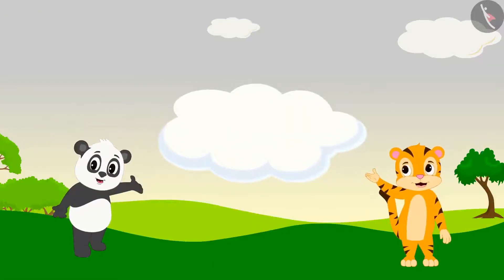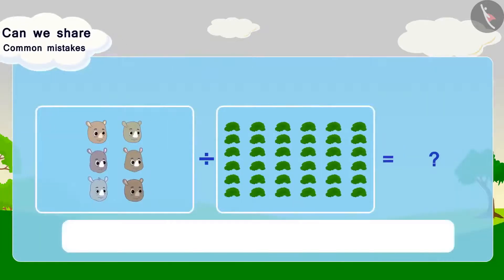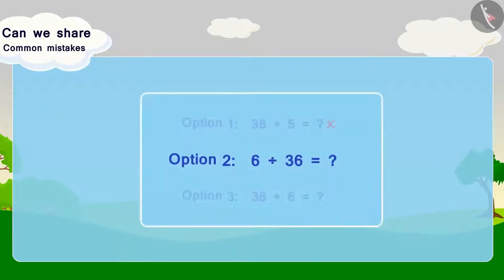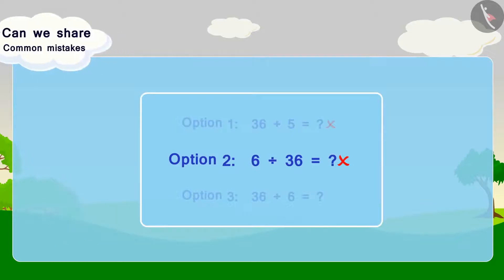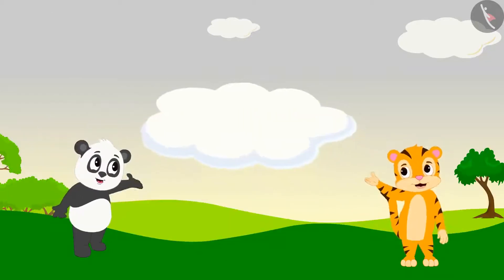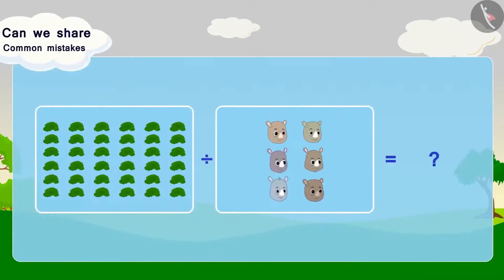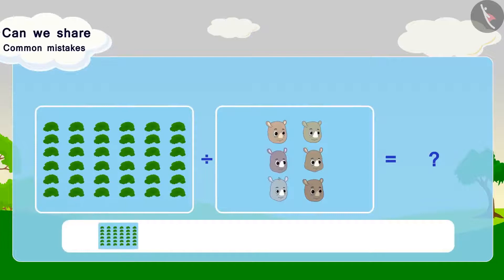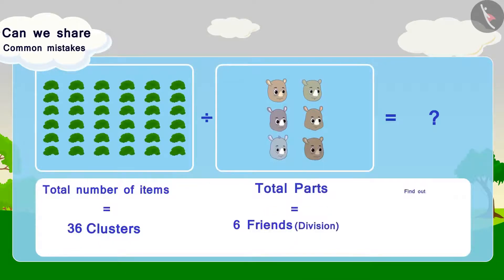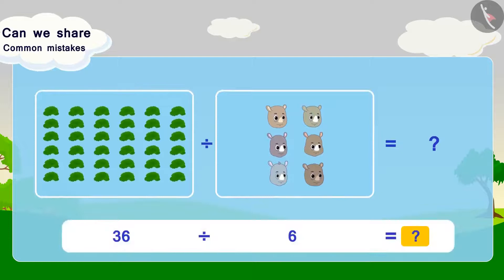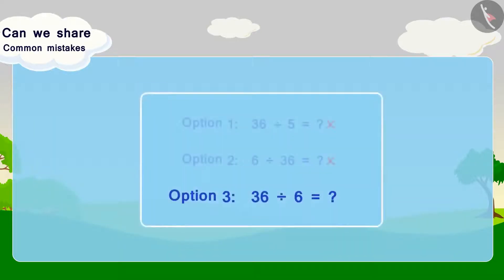In Option 2, six friends are being divided into 36 grass clusters — which is the wrong arrangement for this question. So this option is also incorrect. This is a very common mistake made while performing division. In Option 3, we write: 36 clusters divided among six friends equals how many clusters per friend? Here we have correctly divided 36 clusters into six friends — so this is the right option.